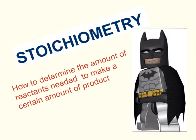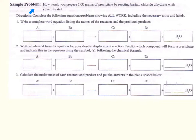Stoichiometry is the branch of chemistry that measures quantitative relationships between reactants and products. Stoichiometry can be used to determine the amount of reactants that are needed to produce a given amount of a specific product, and that is what this video will cover. Let's use stoichiometry to calculate the amount of reactants needed to produce a specific amount of product.